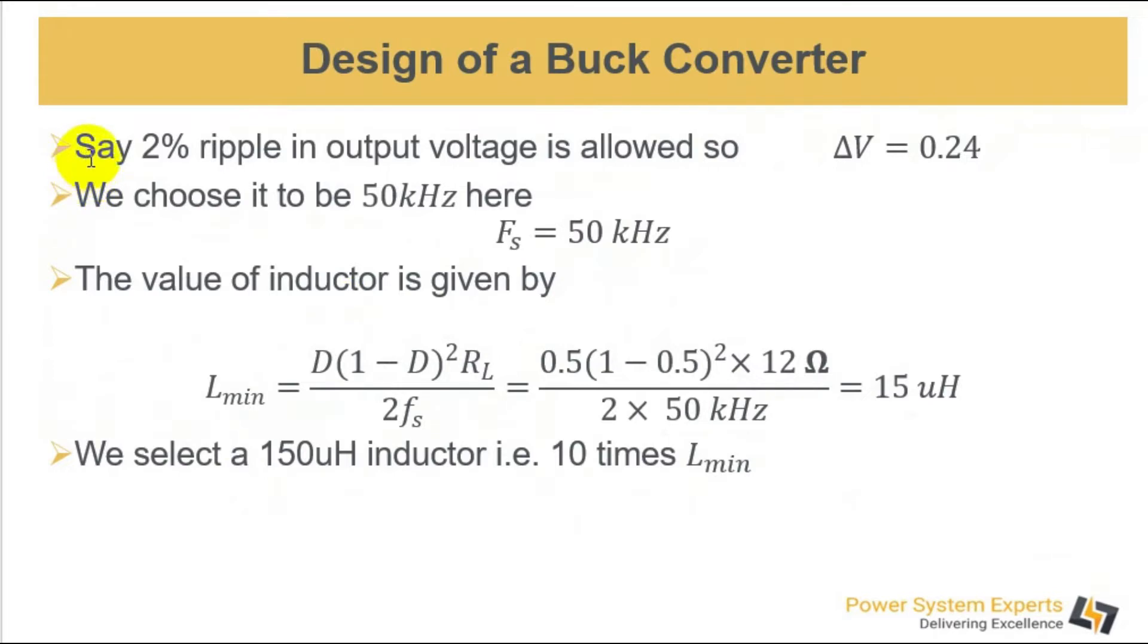Say you need to tolerate 1% ripple in the output voltage, which would be 0.24 volts, and a switching frequency of 50 kilohertz.